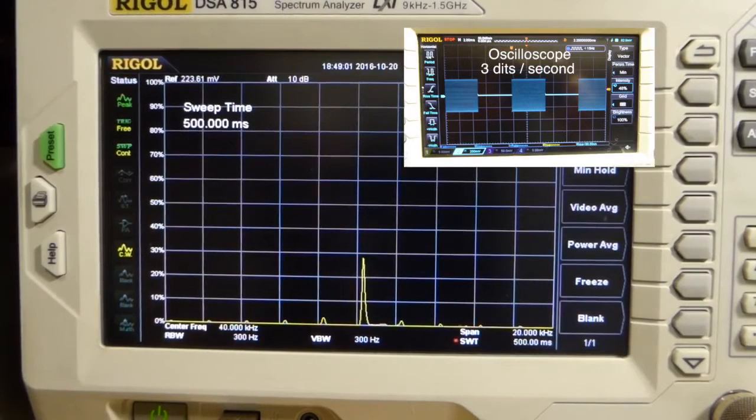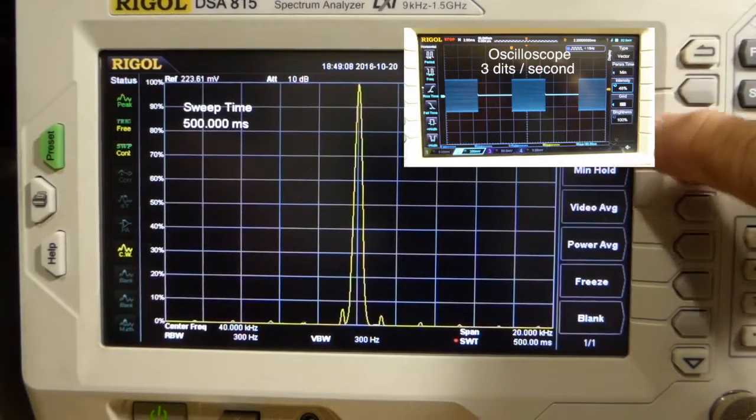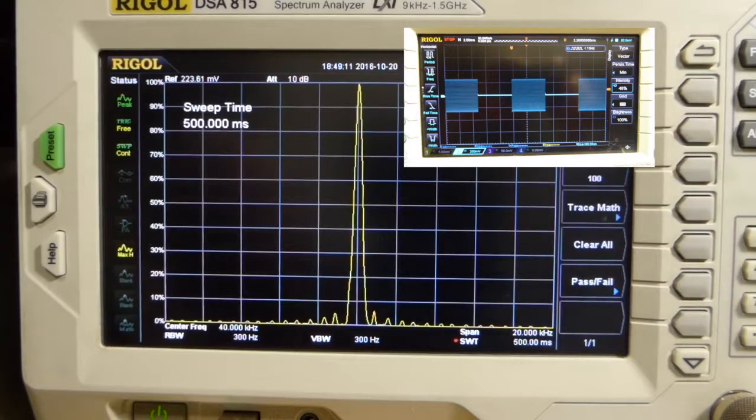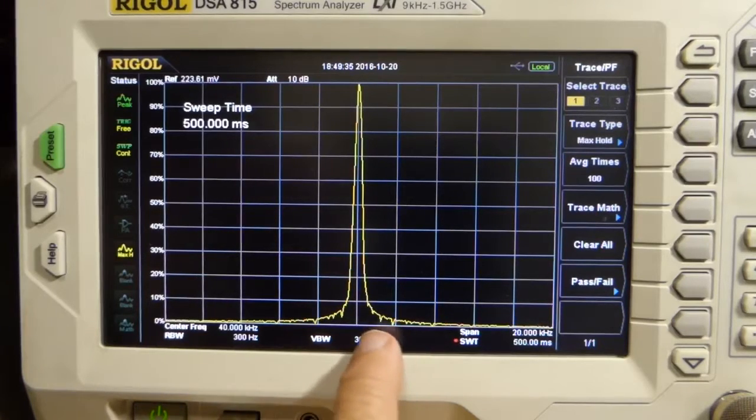Now I'll sort of demonstrate that here by changing the mode by adding some modulation to this signal. Here we have the CW signal. And I'm going to change this to maximum hold here, which will paint a picture of what that looks like because we're sweeping across. We don't always catch it when it's turned on. Now you see that the carrier itself is clean.